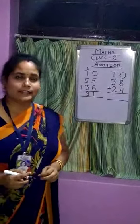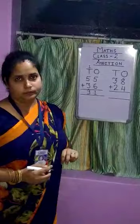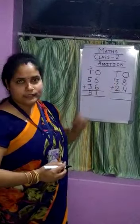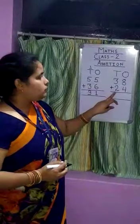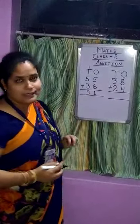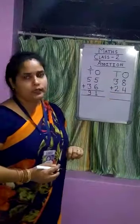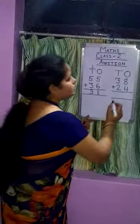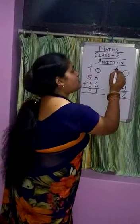Our second example is 38 plus 24. In the number 38, 8 is in the ones place and 3 is in the tens place. In 24, 4 is in the ones place and 2 is in the tens place. Now addition in the ones place: 8 plus 4 equals 12. So we write 2 in the ones place and carry 1 to the tens place.